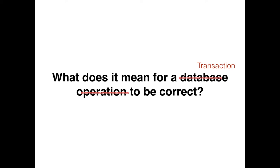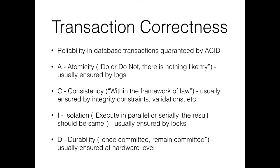What does it mean for a transaction to be correct? You may have heard the term ACID properties or ACID guarantees — this is a set of four properties that define transaction correctness. The first is atomicity, which basically says the transaction either completes entirely or doesn't complete at all. Either you do the entire thing or you do nothing. From the perspective of the database and the outside world, either the entire transaction completes and commits, or there is no trace the transaction ever happened.